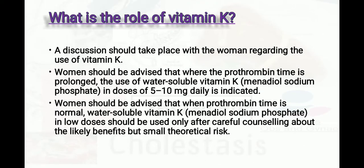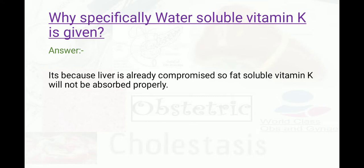Regarding vitamin K, a discussion should take place with the woman about its use. Where prothrombin time is prolonged, water-soluble vitamin K — menadiol sodium phosphate — in a dose of 5 to 10 mg daily is indicated. When prothrombin time is normal, it should be used only after careful counselling about the likely benefit and small theoretical risk. Water-soluble vitamin K is used specifically because the liver is compromised in obstetric cholestasis, so fat-soluble vitamin K will not be absorbed properly.